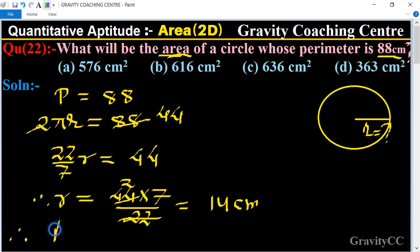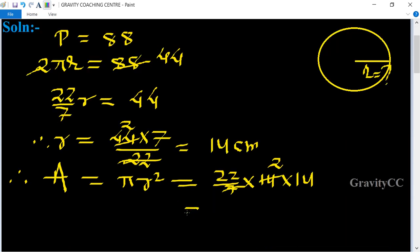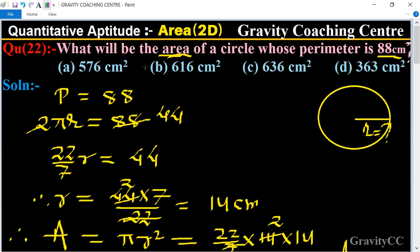Therefore its area is πr², equal to 22 upon 7 into 14 into 14, and 7 into 14, so their product is 616 centimeter square, which is the required answer. So option B is the correct answer.